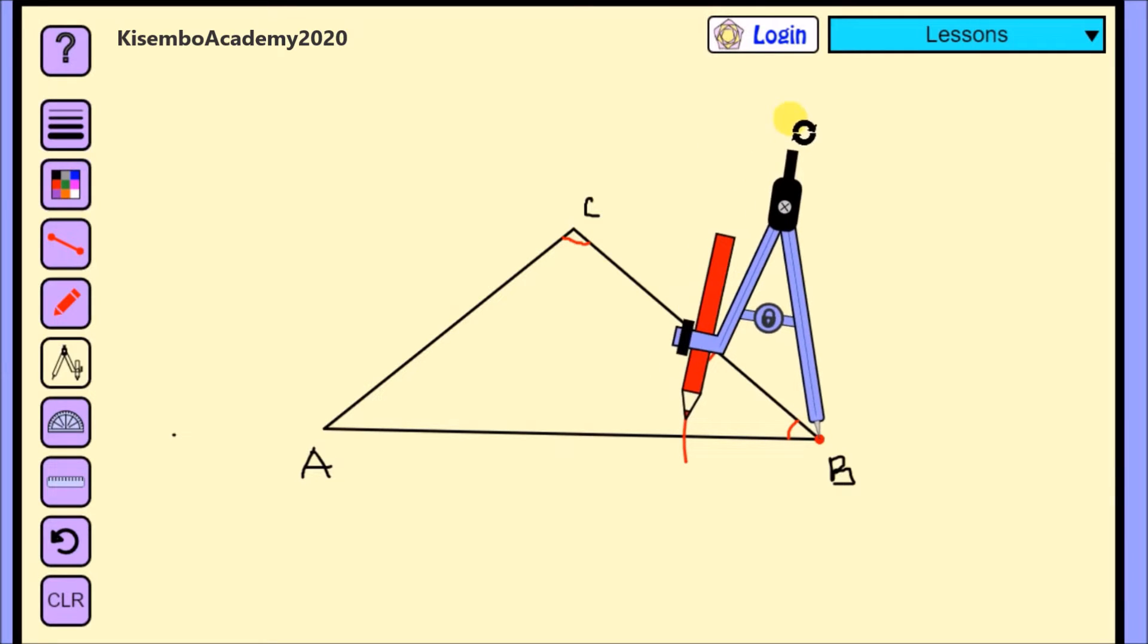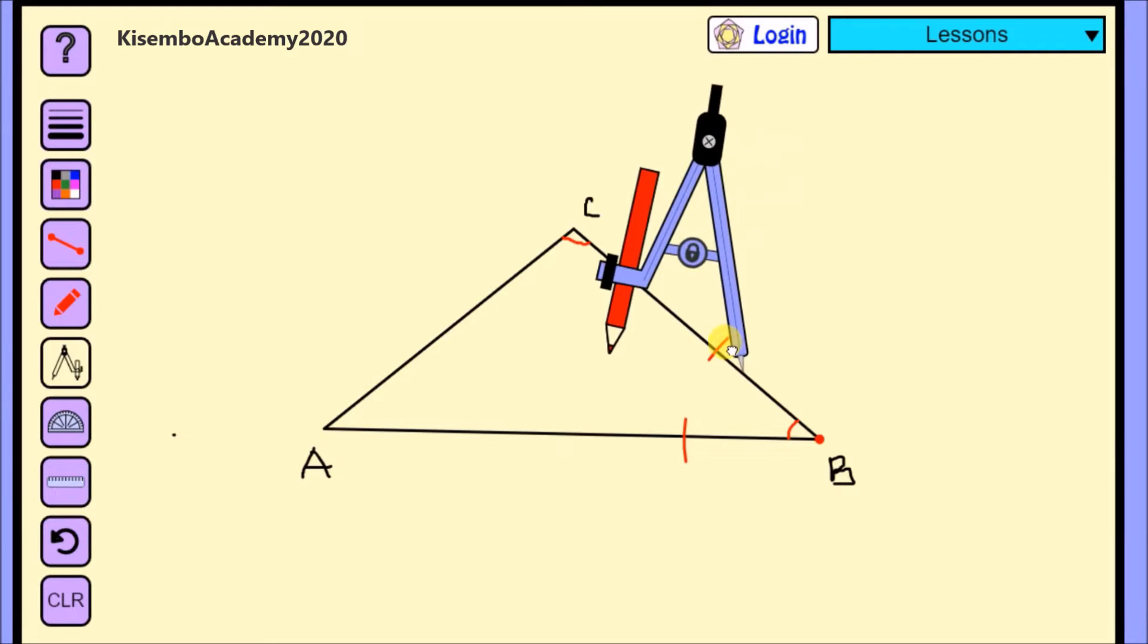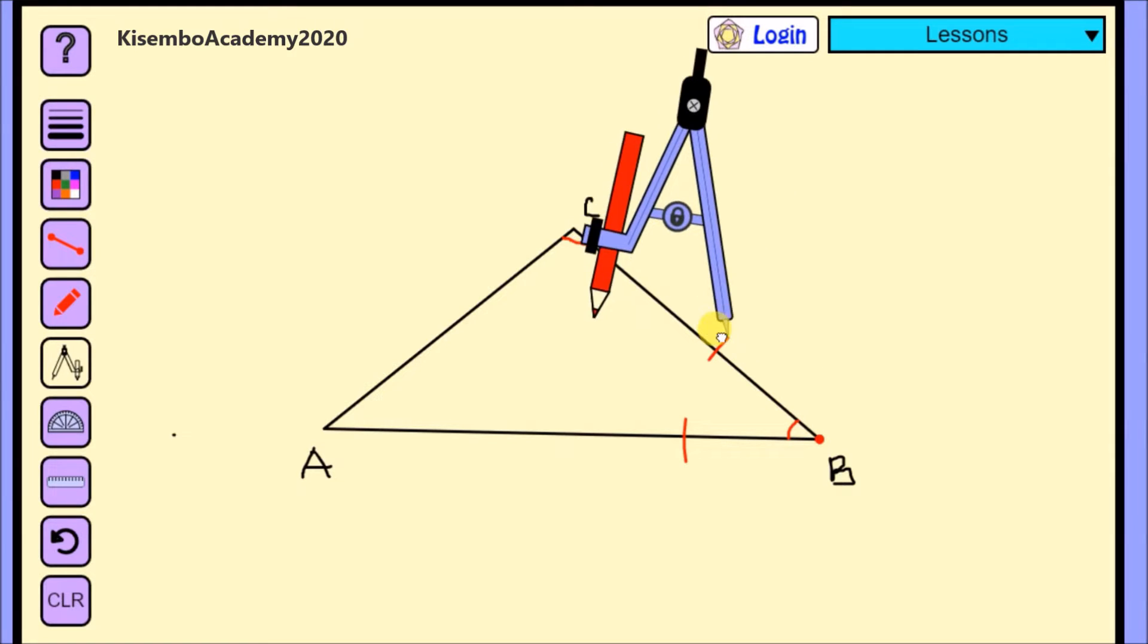So how do I bisect this? Of course, I'll get my compass needle, put it at point B, draw an arc up there, draw an arc down here, then I'll move my compass needle.